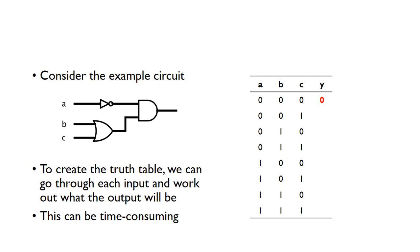If we look at this example circuit — suppose we're given this combinational logic circuit with a NOT gate, an OR gate, and an AND gate combined together in these particular ways — we can create a truth table from that circuit by going through each possible input combination and working out what the output would be.